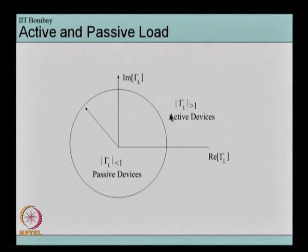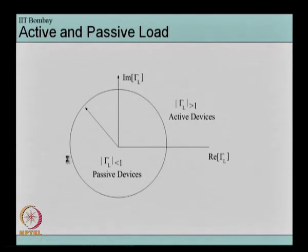This is once again summarizing what I was saying: all passive devices having gamma l, that is the reflection coefficient equal to or less than 1, will be confined within this unit circle.